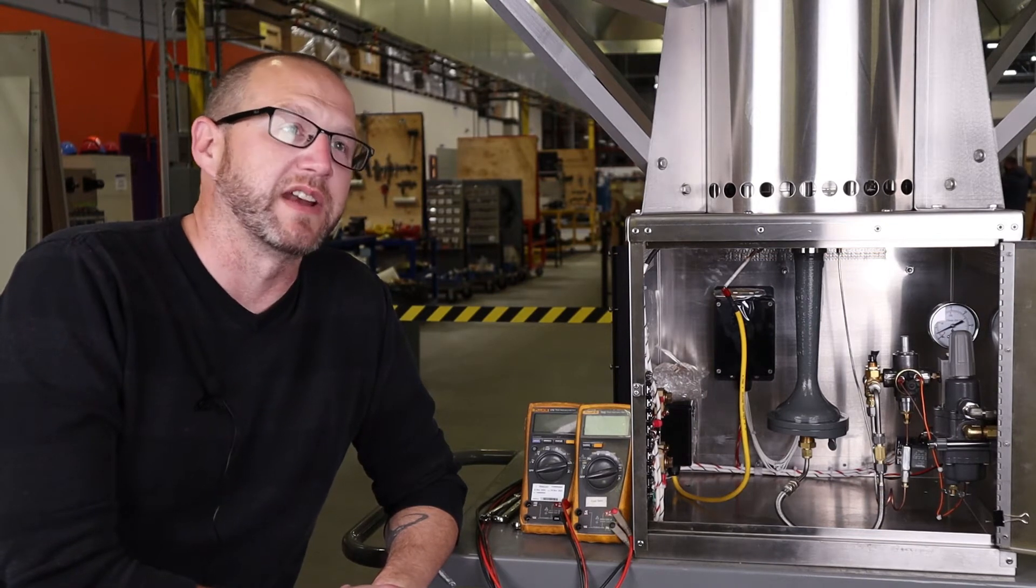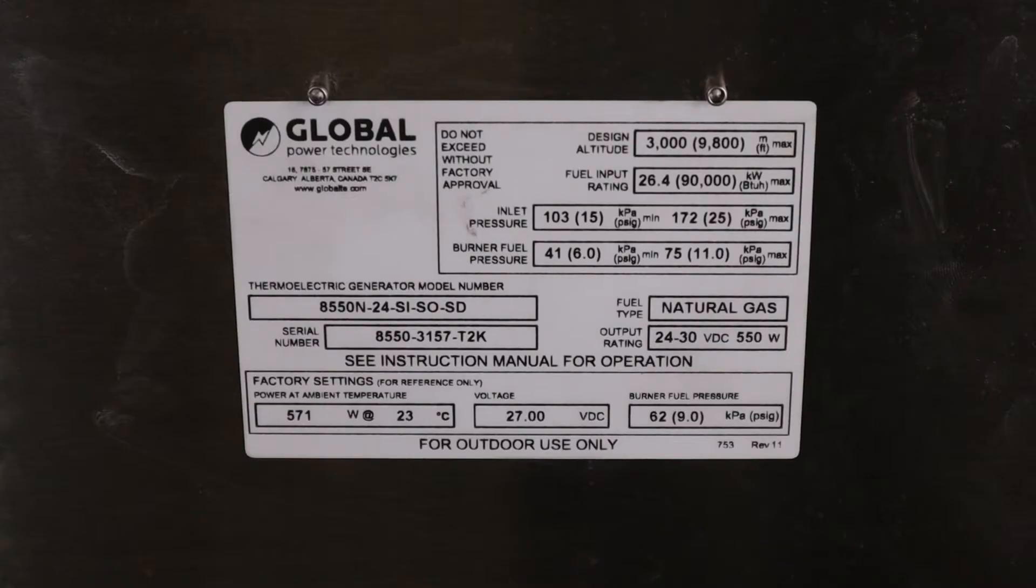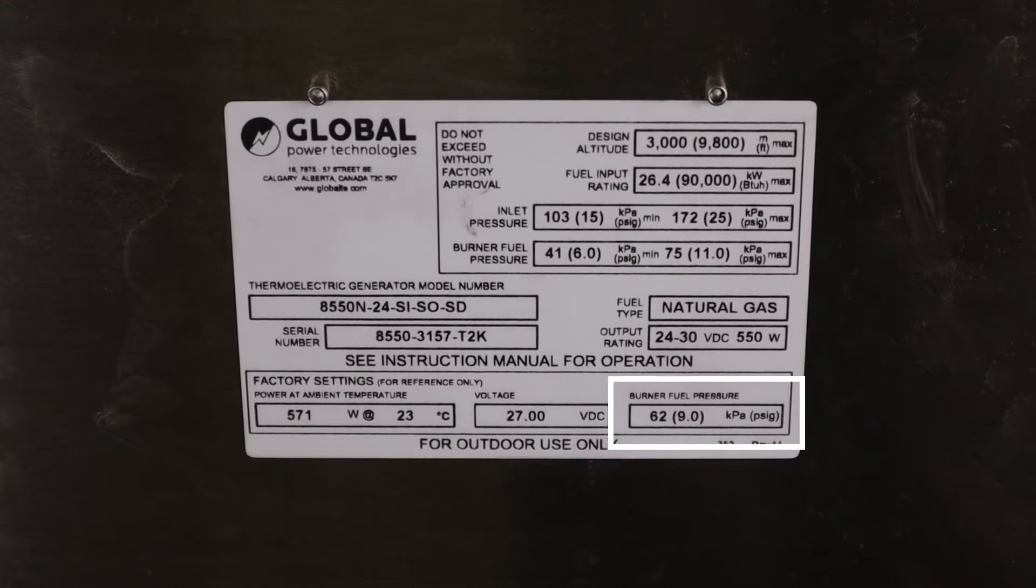Now that we have everything installed, we're ready to start the TEG. Check that the fuel pressure is still close to where it was set at the factory. This pressure is marked on the inside of the door of the cabinet.